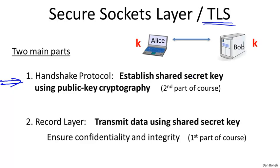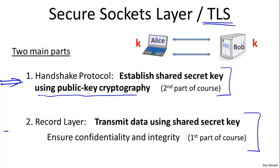The way you establish this secret key, the way you do the handshake, is using public key cryptography techniques, which we're going to talk about in the second part of the course. Once Alice and Bob have the shared key, we can use this key to communicate securely by properly encrypting data between them. And in fact, this is going to be the first part of the course, which is essentially once the two sides have a shared secret key, how do they use that secret key to encrypt and protect data that goes back and forth between them.